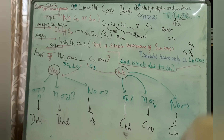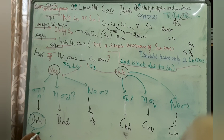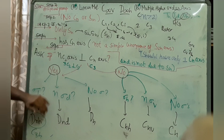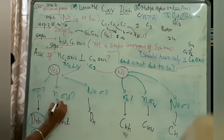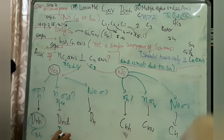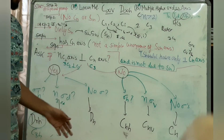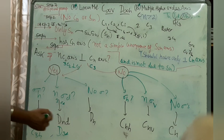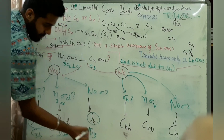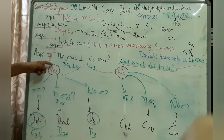If the answer is yes (there are n C2s perpendicular to Cn): if there is a σh, the molecule belongs to Dnh — for example D3h. If there is no σh but there are n σd's, it belongs to Dnd — for example D3d. If there are absolutely no sigmas, it belongs to Dn — for example D3.